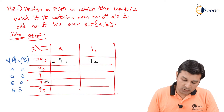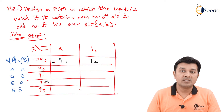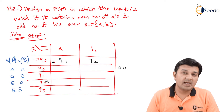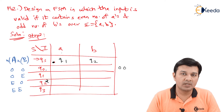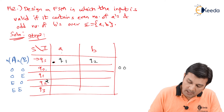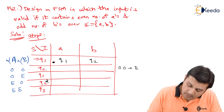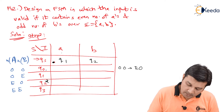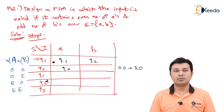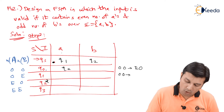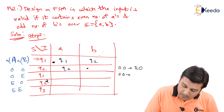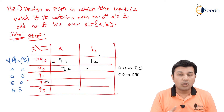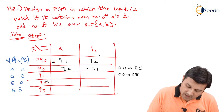State Q0 holds strings with odd A's and odd B's. When Q0 receives input A, the odd A count becomes even — so odd-odd becomes even-odd, which is Q2. When Q0 receives input B, the odd B count becomes even — so odd-odd becomes odd-even, which is Q1.